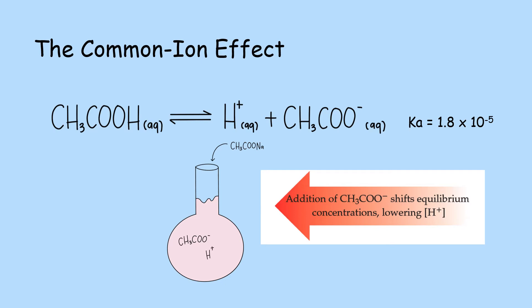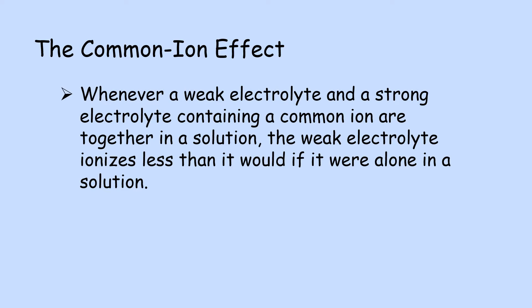We call this observation the common ion effect. Whenever a weak electrolyte and a strong electrolyte containing a common ion are together in a solution, the weak electrolyte ionizes less than it would if it were alone in a solution, and this is what we call the common ion effect.